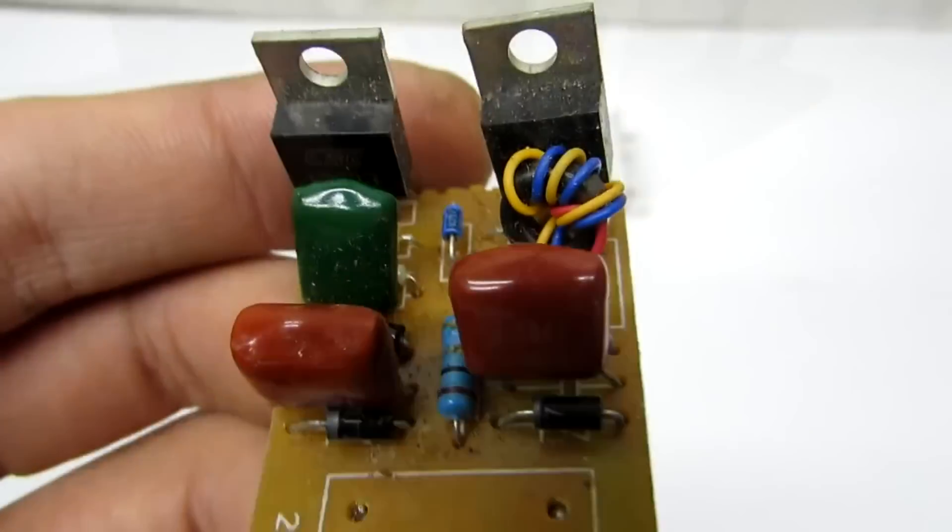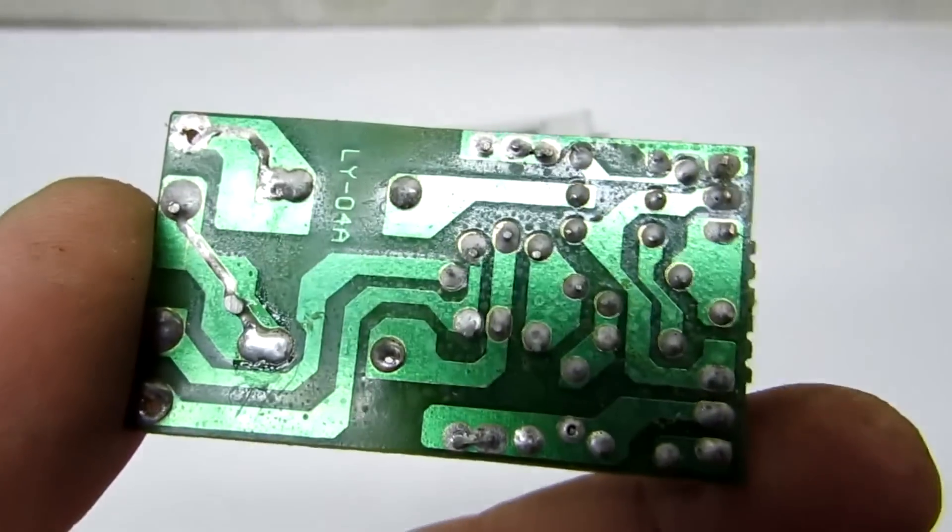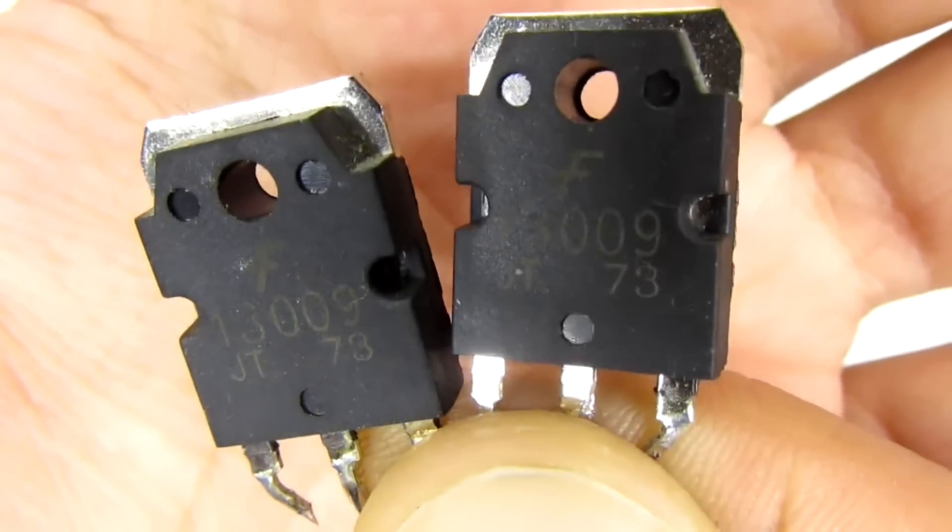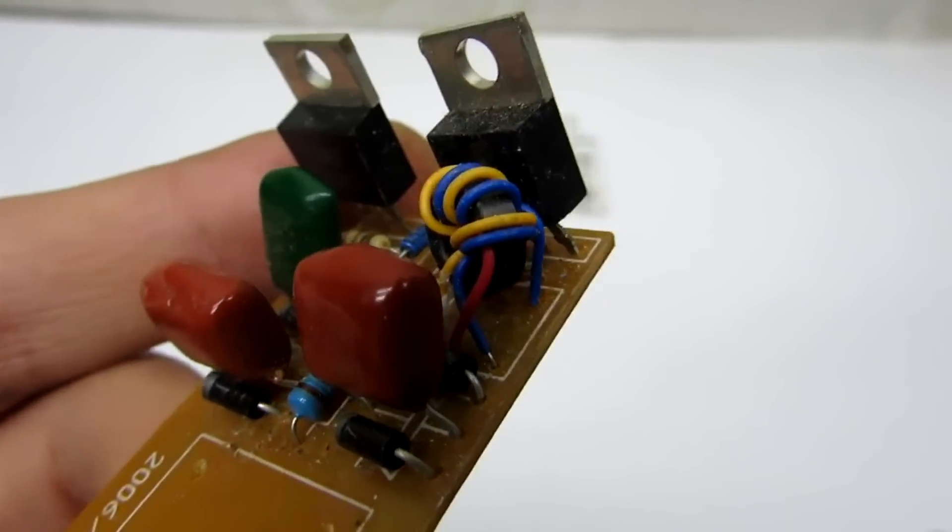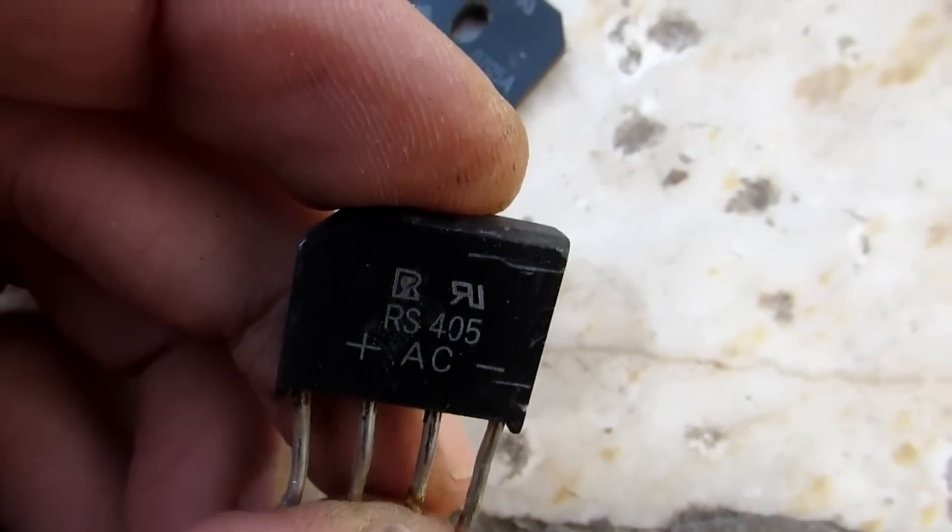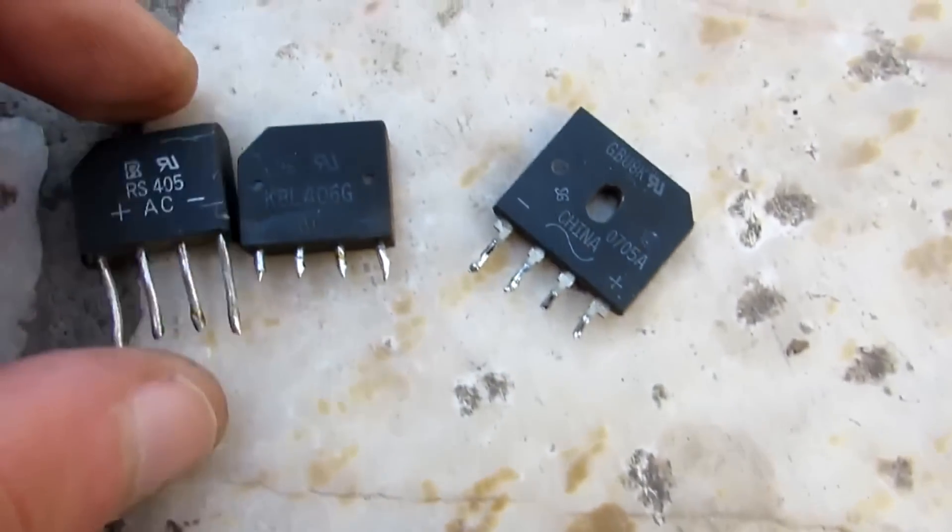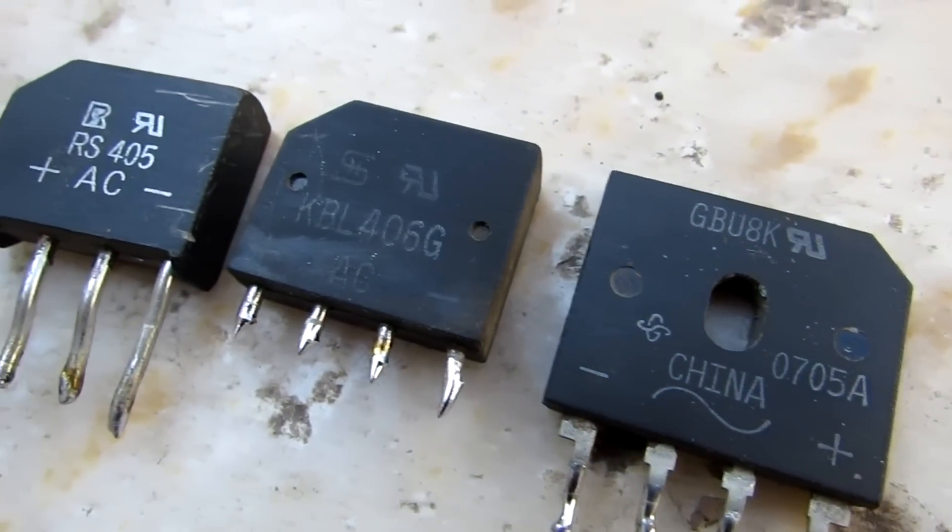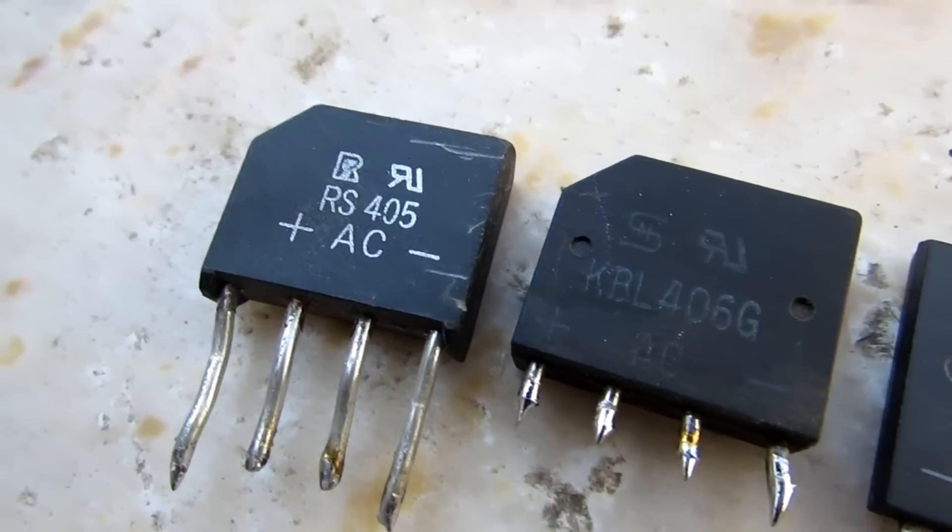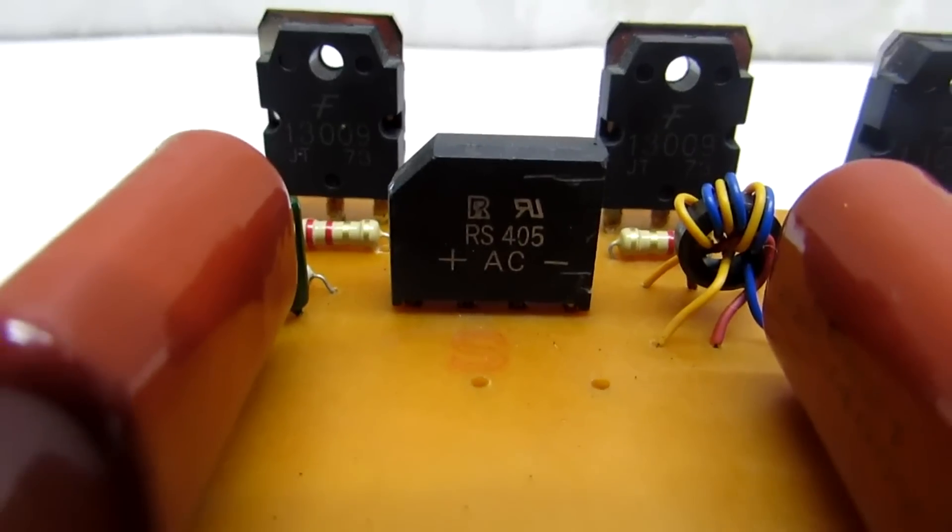I did replacements from 13003 to 13009 IN4007 diodes with 1 ampere current to the bridge rectifier with a current 4 ampere, 600 volt. Here suited any bridges with current from 3 ampere and voltages about 400 volt.